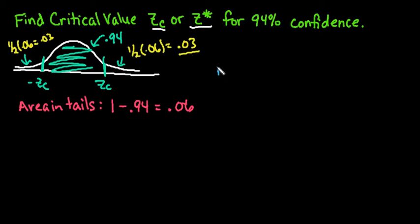your calculator and you find the inverse norm, you can just type in the area is 1/2(1 minus your level of confidence), 0, 1. So you can either type this in.